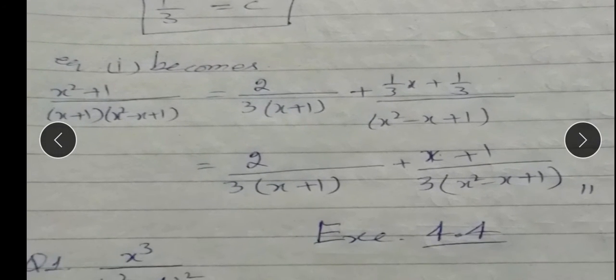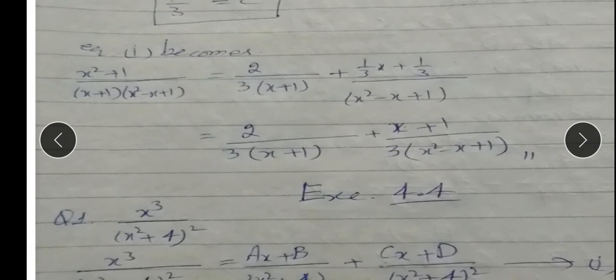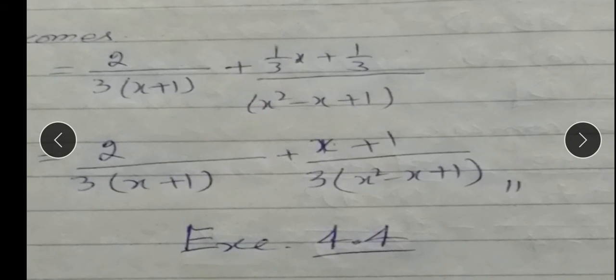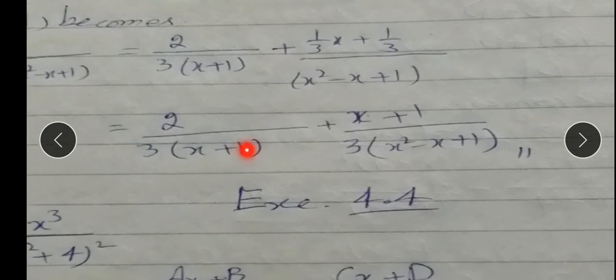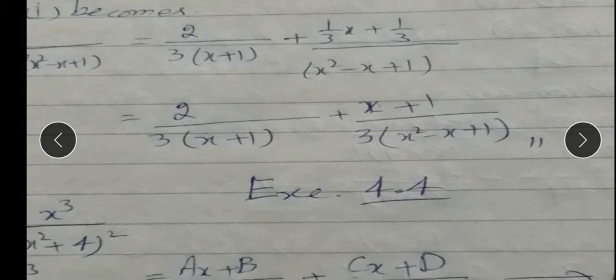Values equation 1 mein substitute karte hain: (x²+1) over (x+1)(x²-x+1) = (2/3) over (x+1) + (x/3 + 1/3) over (x²-x+1), which simplifies to 2/3 over (x+1) + (x+1) over 3(x²-x+1). Yeh is the answer.